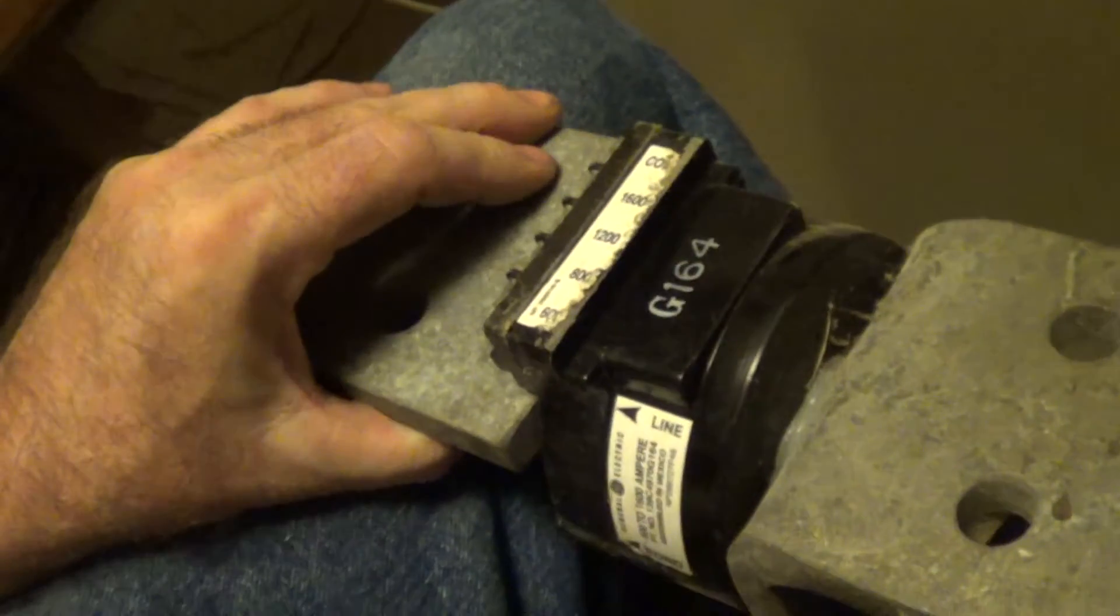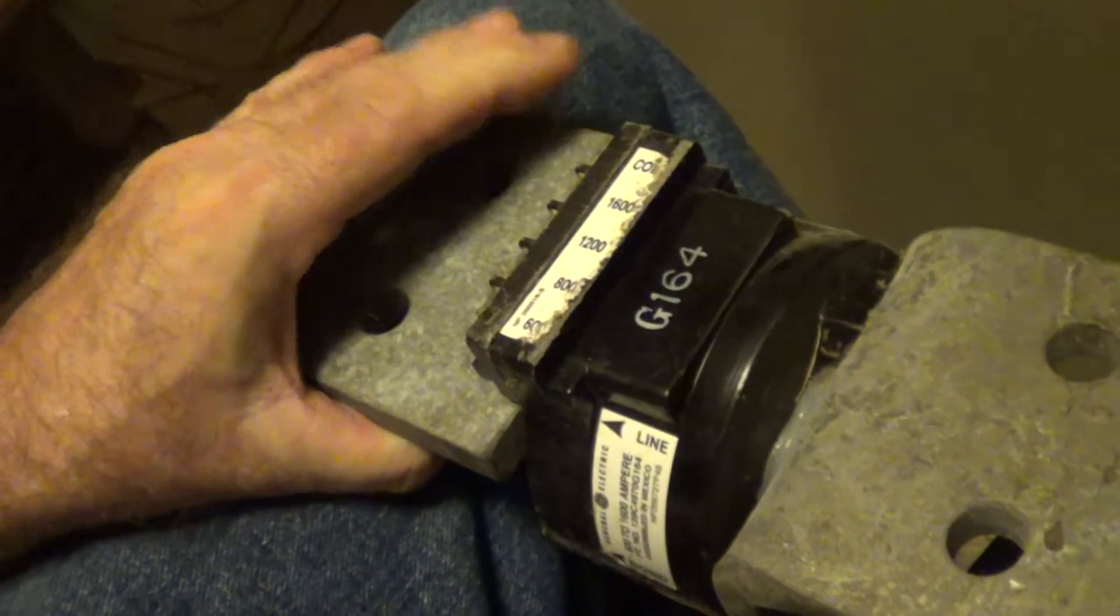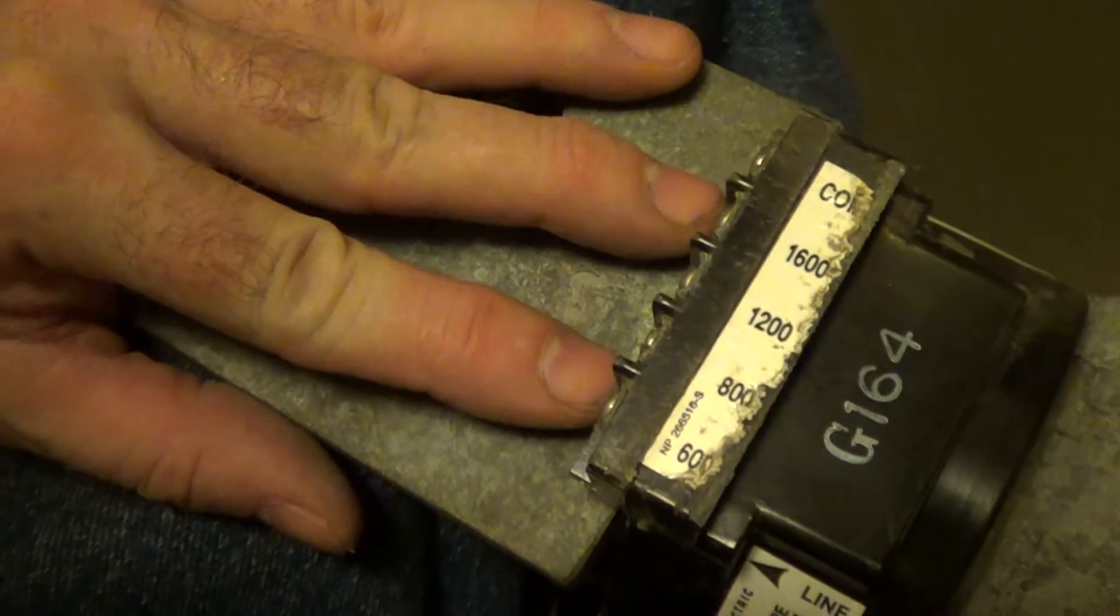Usually use one of these in a substation. It's 600 to 1600 amperes, and then this is the current connection here for your meter or control circuit.